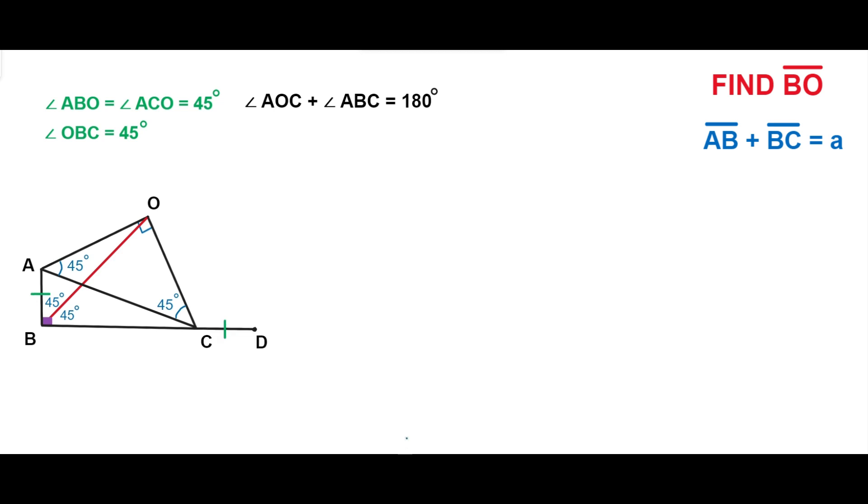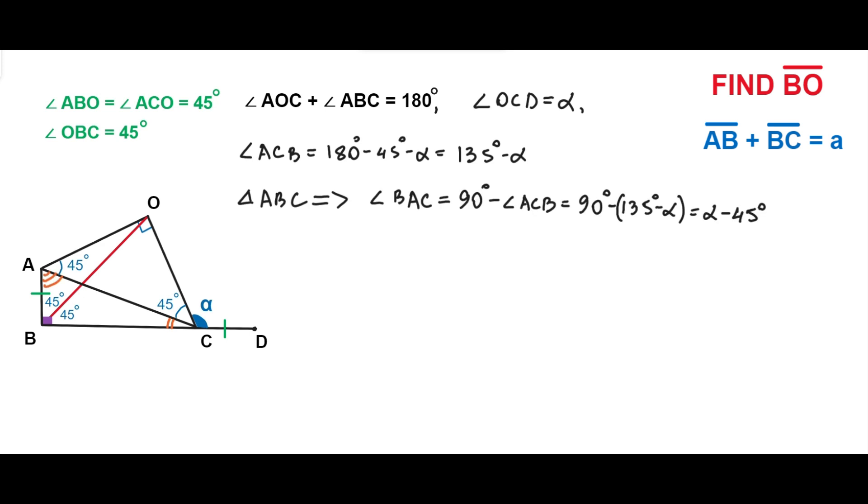Let alpha denote the angle OCD. The angle ACB equals 180 degrees minus 45 degrees minus alpha, which equals 135 degrees minus alpha. The angle BAC equals 90 degrees minus angle ACB, which equals alpha minus 45 degrees. The angle BAO equals angle BAC plus 45 degrees, which equals alpha.